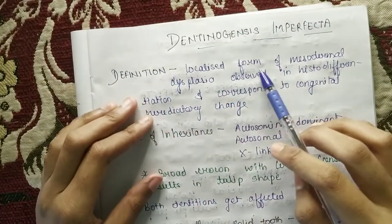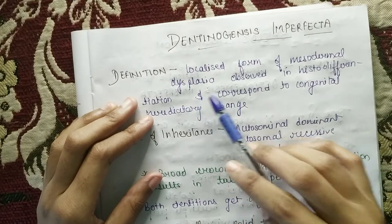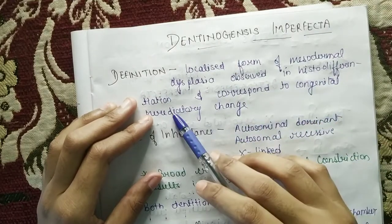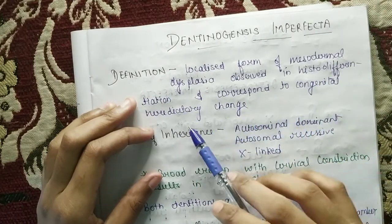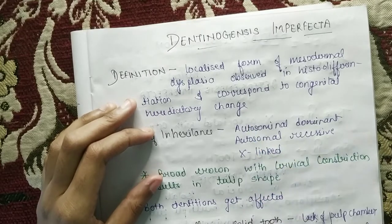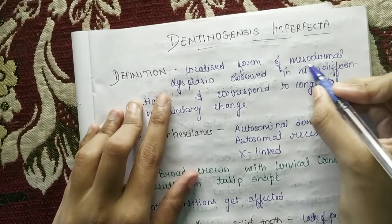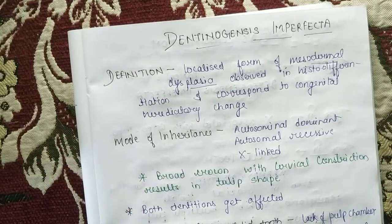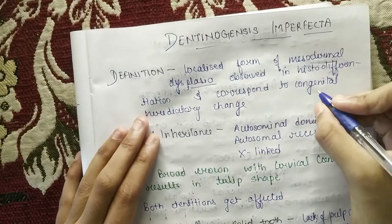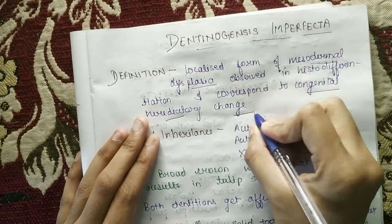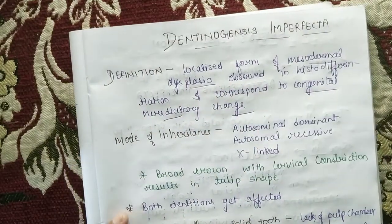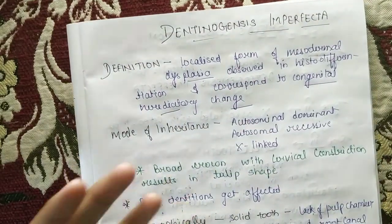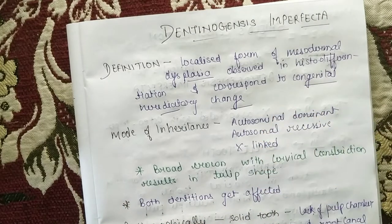It is a localized form of mesodermal dysplasia observed in histo-differentiation, and it corresponds to a congenital hereditary change. Sabse pehle, localized form of mesodermal dysplasia mein kuch disturbance hua hai, and most importantly it is a congenital hereditary change — yani ki heredity, i.e. inheritance ki wajah se ye disease hoti hai.